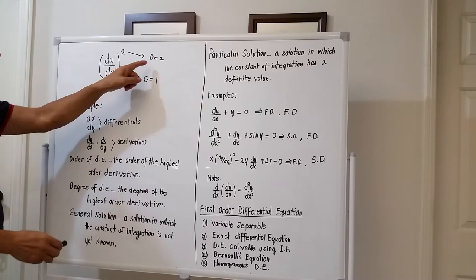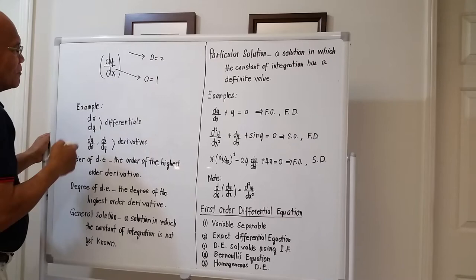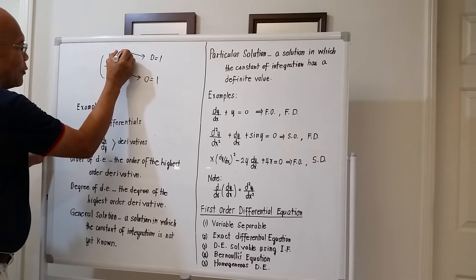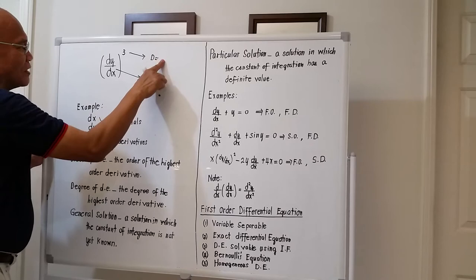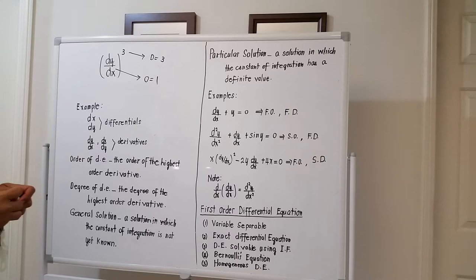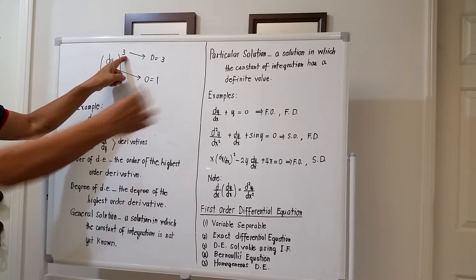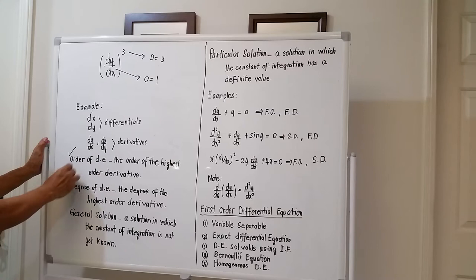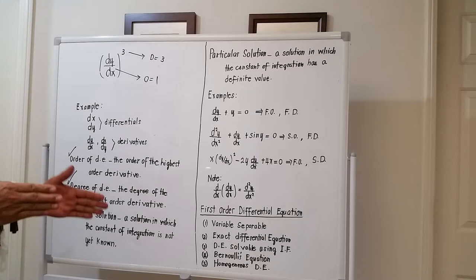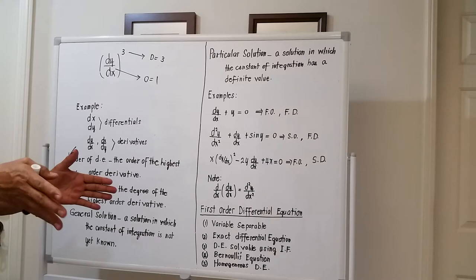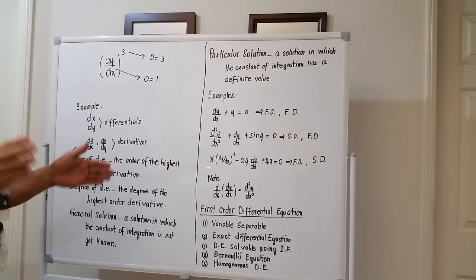If DY/DX has no exponent, the degree is 1. If the exponent is 2, the degree is 2. If it is 3, the degree is 3. So the difference is: order is the highest derivative inside, and degree is the exponent that brackets that derivative.